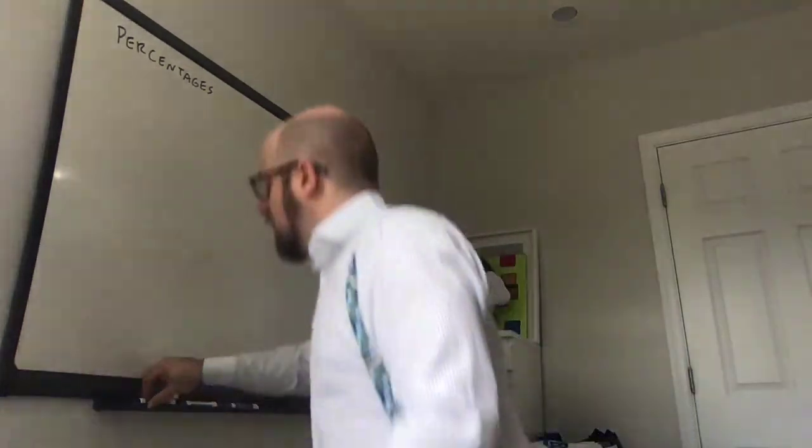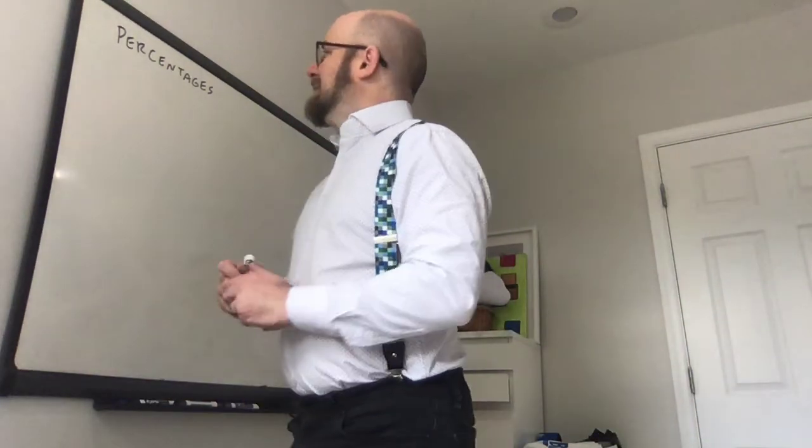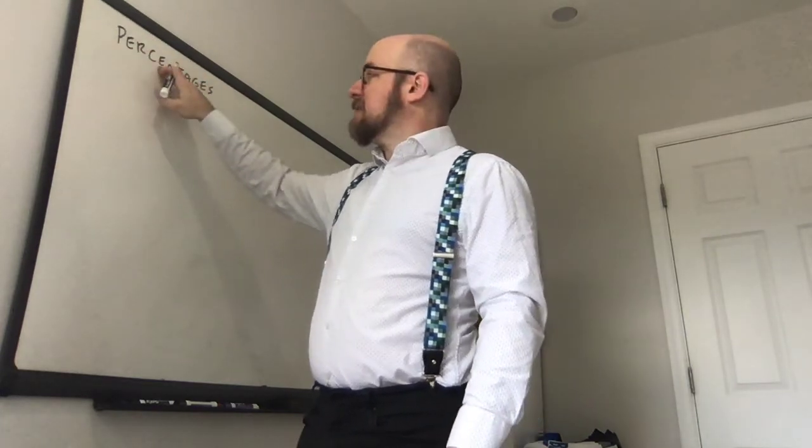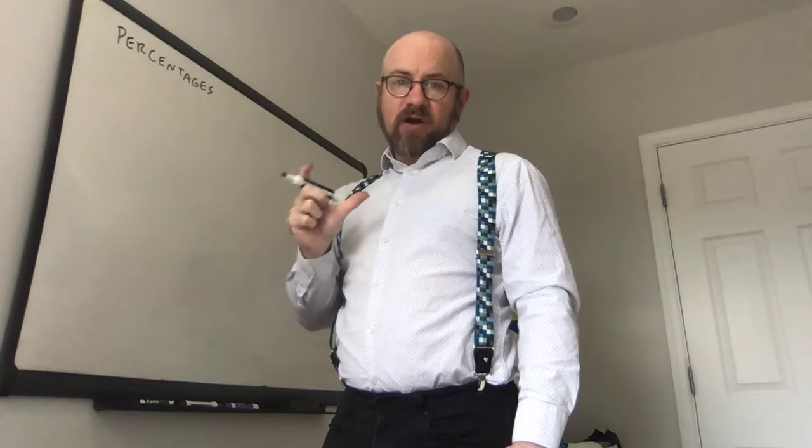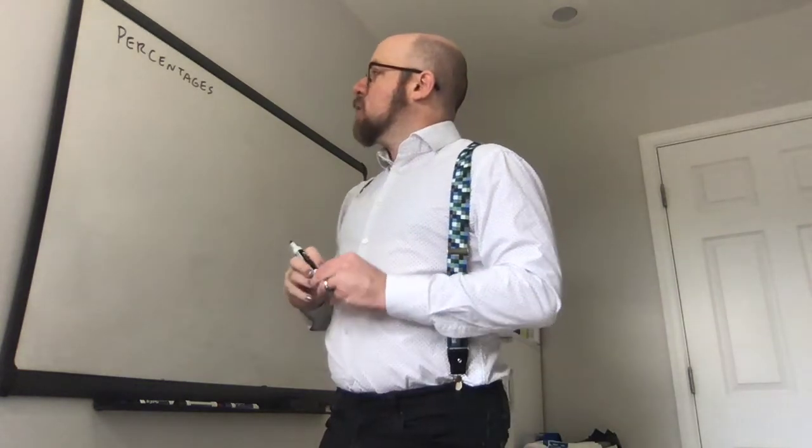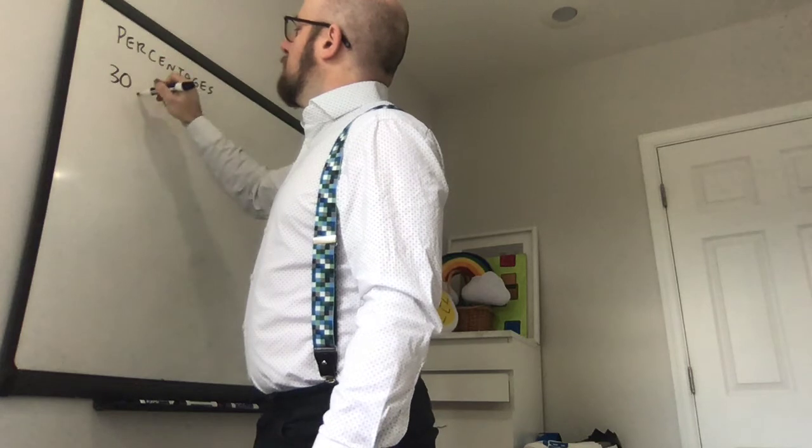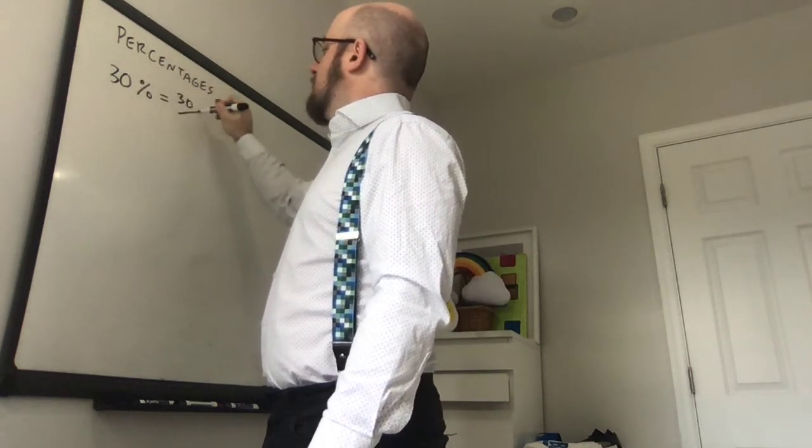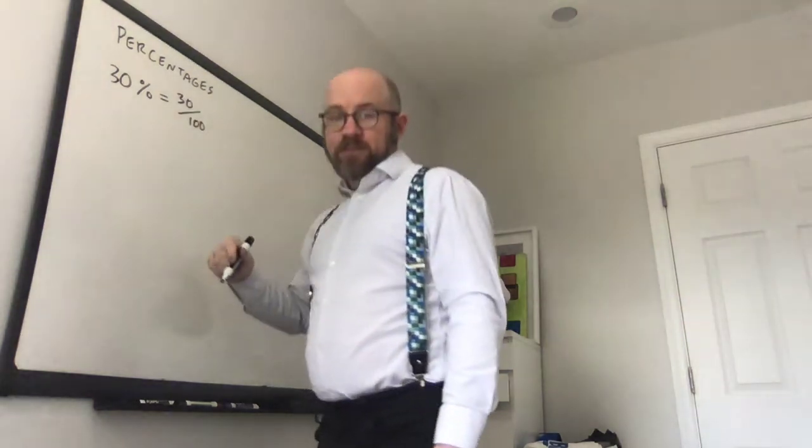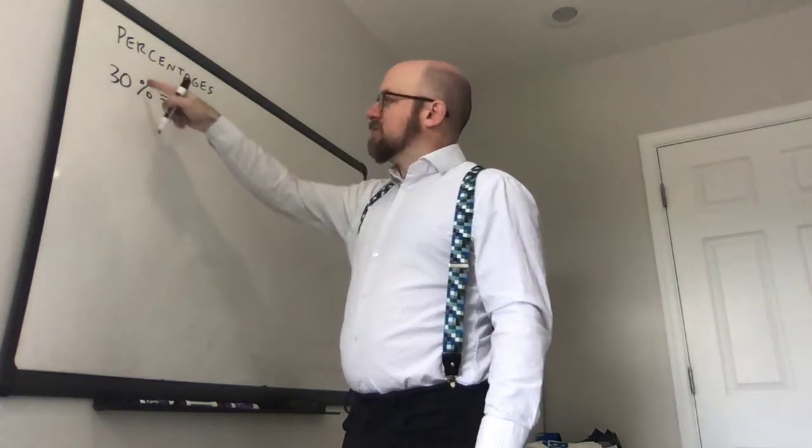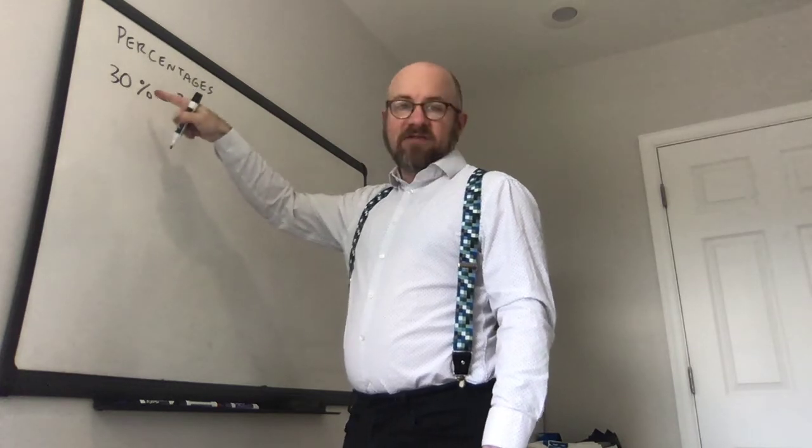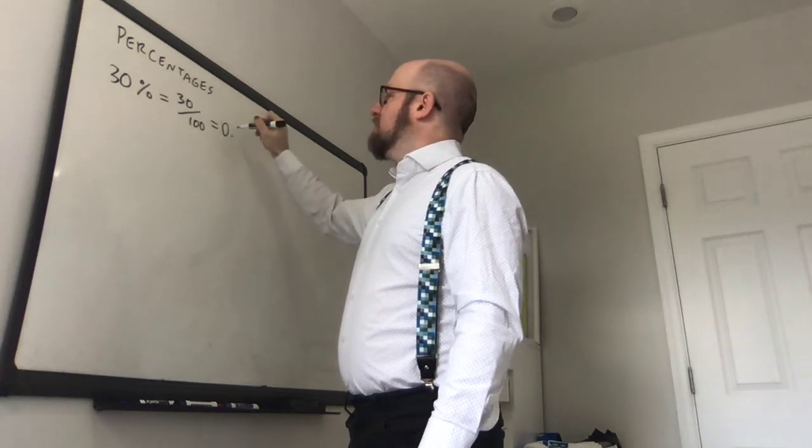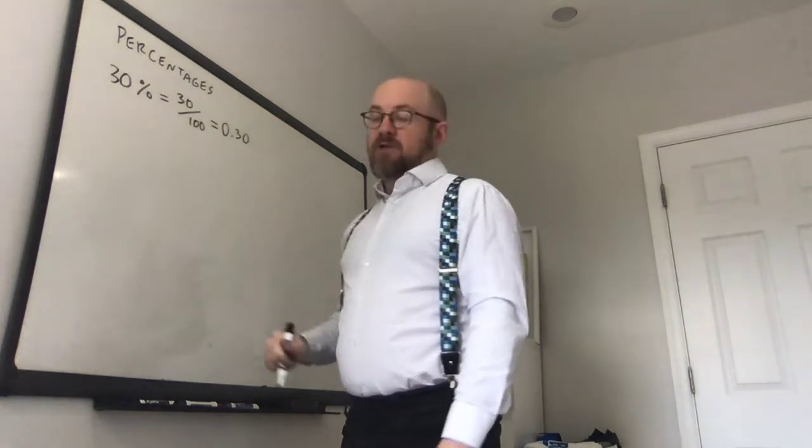A percentage, or percent, this is from the Latin, it literally means out of a hundred. So cent, same word for a cent of a dollar, is 100. So something like 30 percent is another way of writing the fraction 30 out of 100. So 30 out of 100, and that's what this little symbol is short for. Or as a decimal, 0.30.